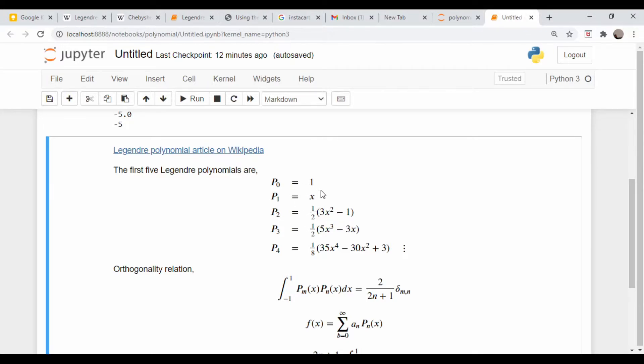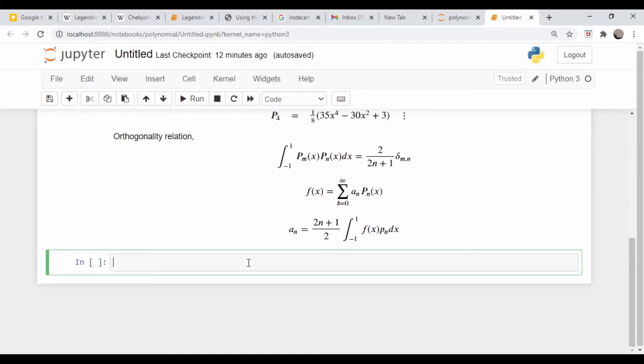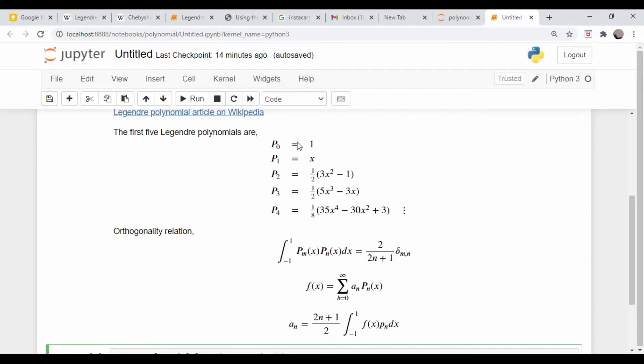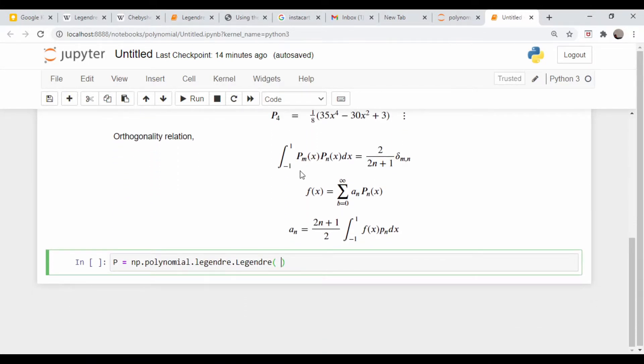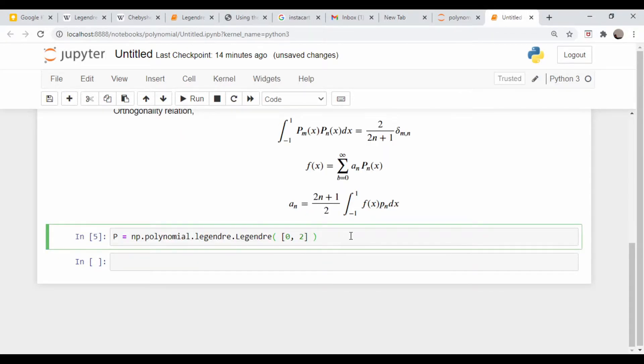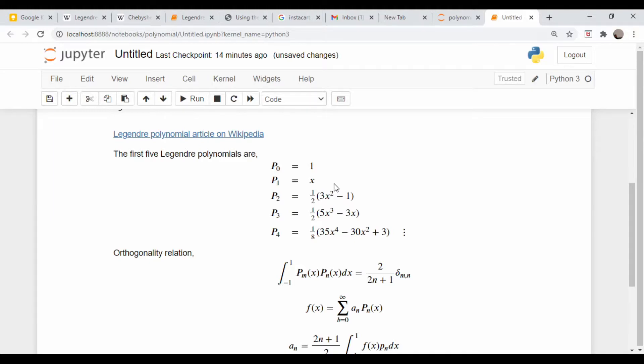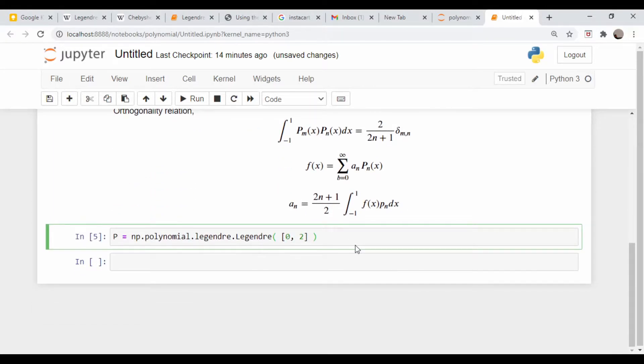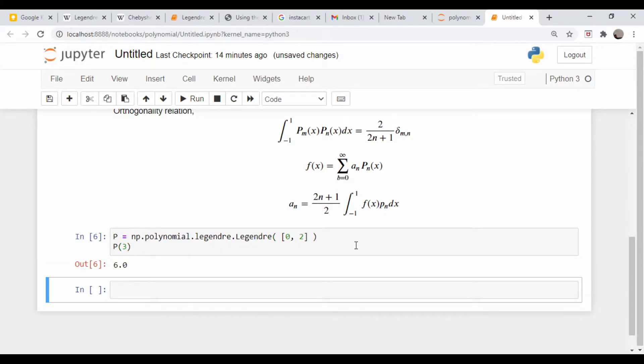So for example, here I want to create the function 2x from this, so that's basically 2 times P1. What I could do is come down here and go p equals np.polynomial.legendre.Legendre with a capital L. Then I define my coefficients. I only want it up to first order, so I only need two coefficients. I don't want the one, so that coefficient is going to be zero, and I want a 2 here to multiply it times 2 times x. So my coefficients are 0 and 2. Let's evaluate 2x when x equals 3, so it should be equal to 6.